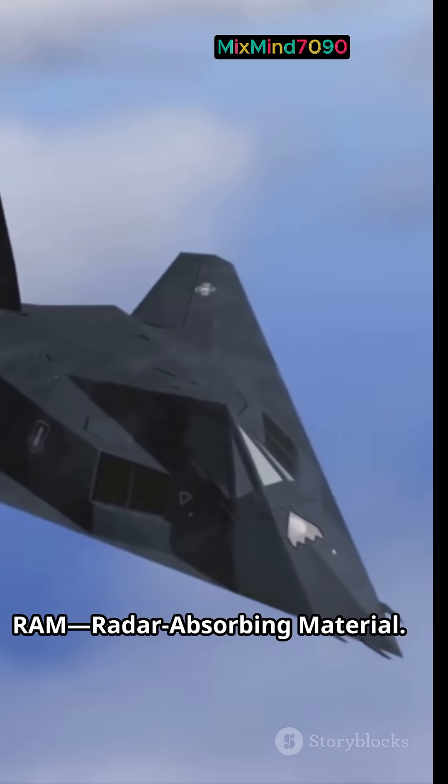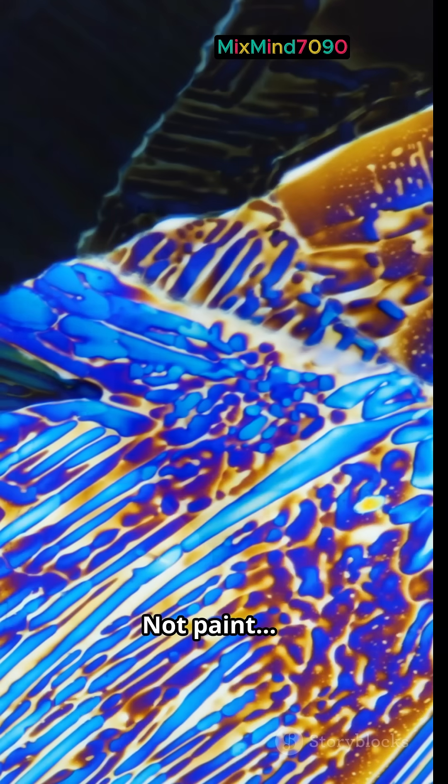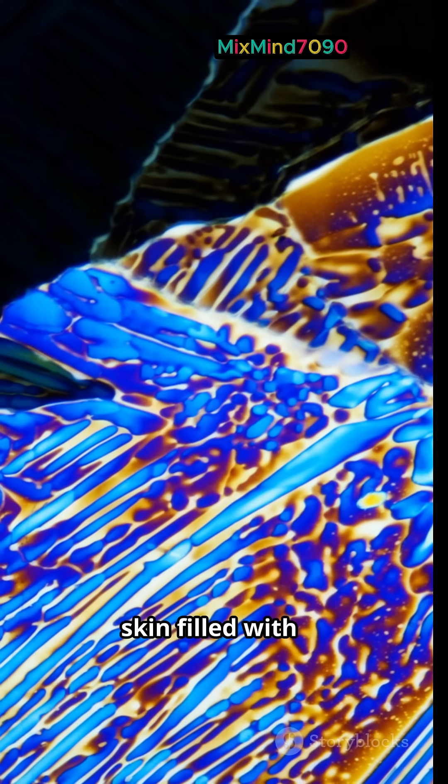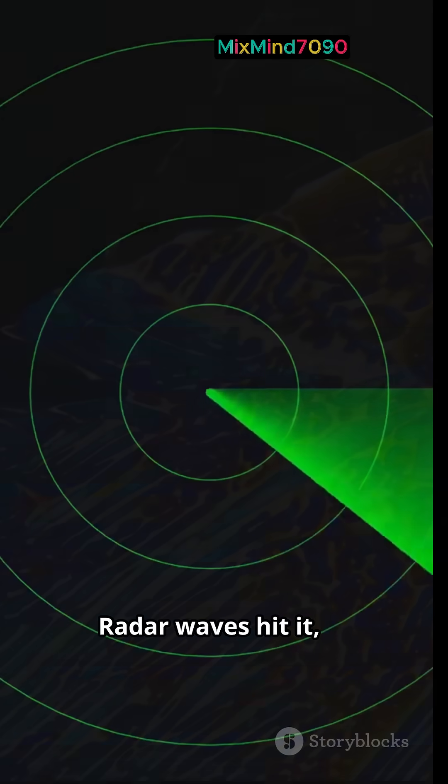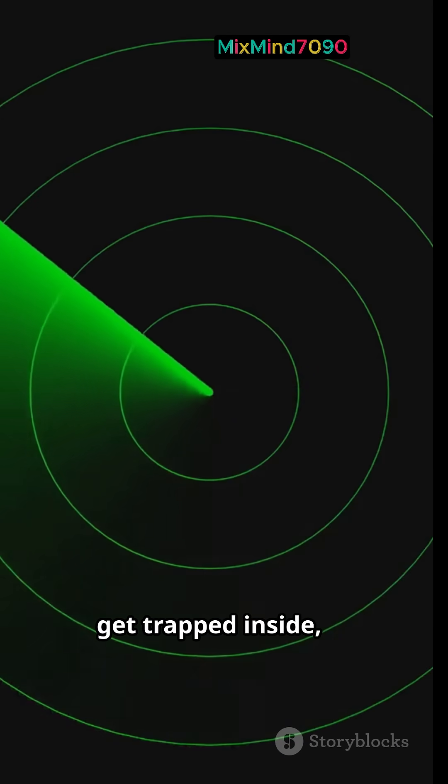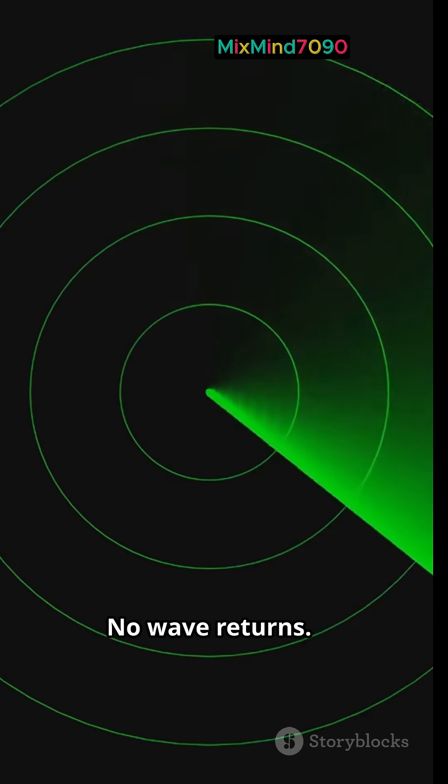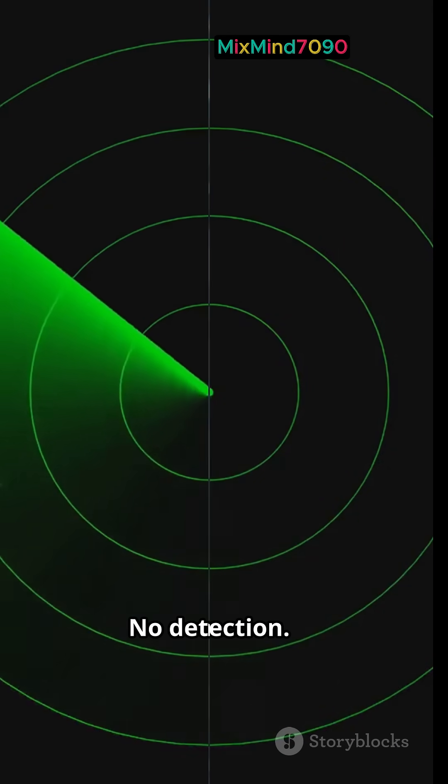The secret is RAM, radar-absorbing material. Not paint, but a high-tech skin filled with nanocarbon structures. Radar waves hit it, get trapped inside, and die as harmless heat. No wave returns, no echo, no detection.